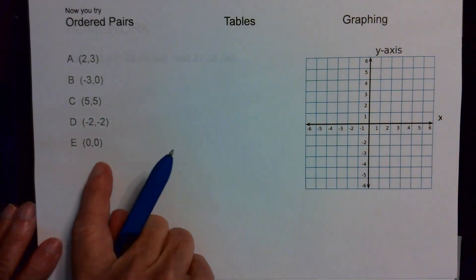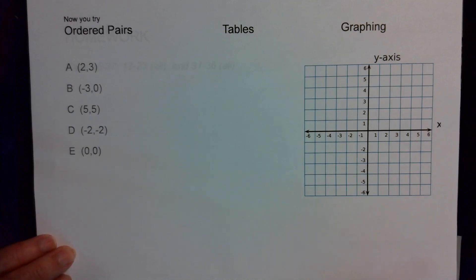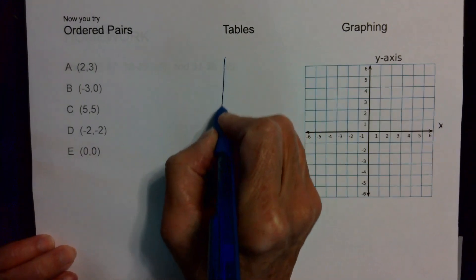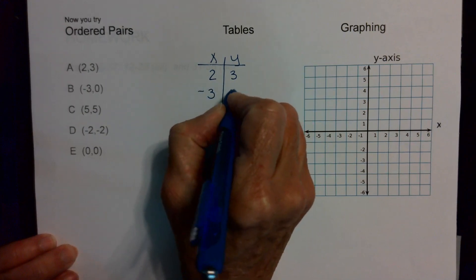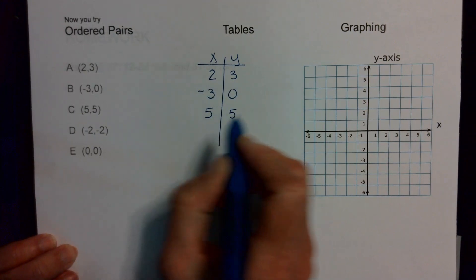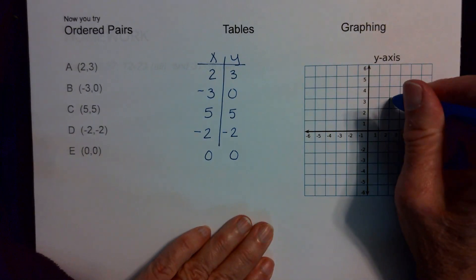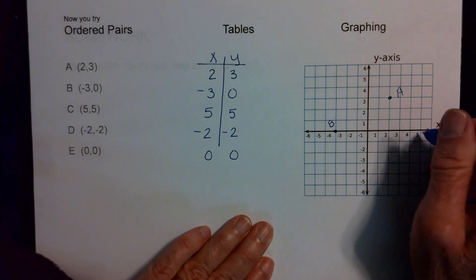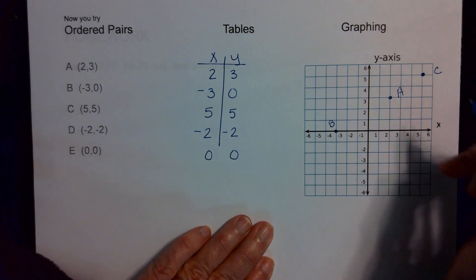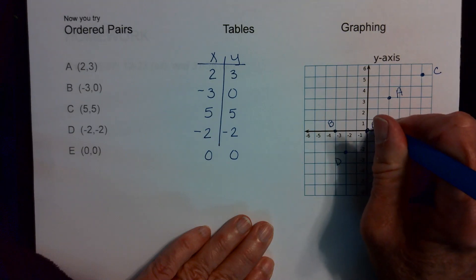Now you try — take these ordered pairs, put them in table form, then put them on the graph. Pause the video and come back. Here's my table with x and y values: (2, 3), (negative 3, 0), (5, 5), (negative 2, negative 2), and (0, 0). On the coordinate plane: point A is (2, 3), point B is (negative 3, 0), point C is (5, 5), point D is (negative 2, negative 2), and point E is (0, 0), which is right on the origin.